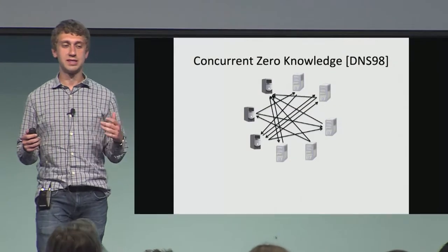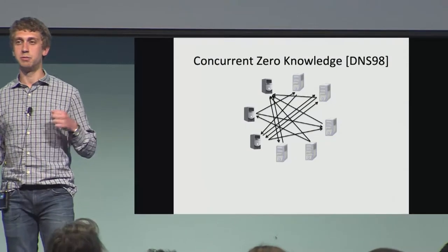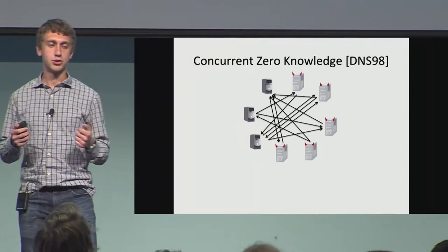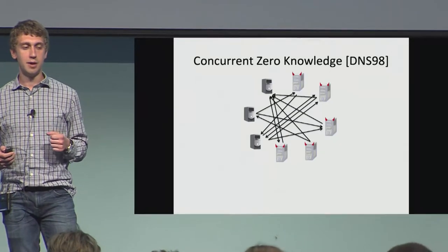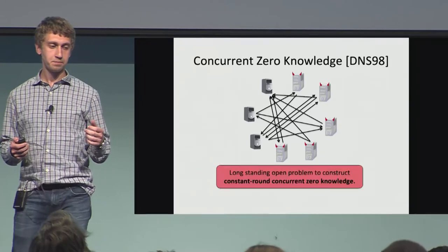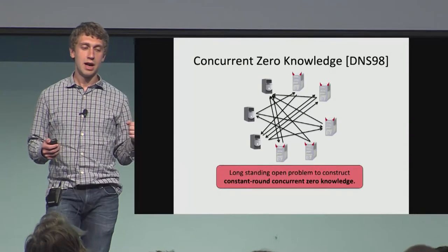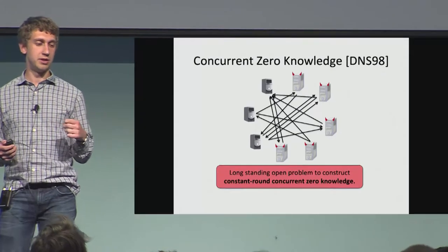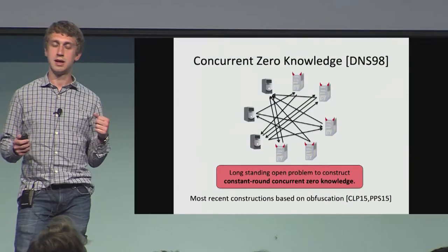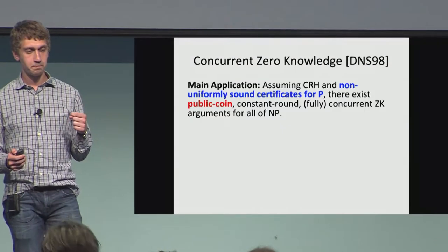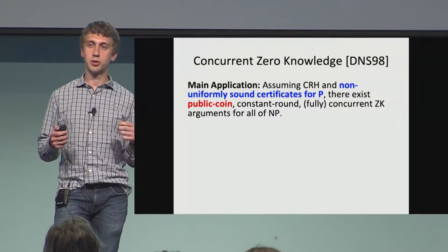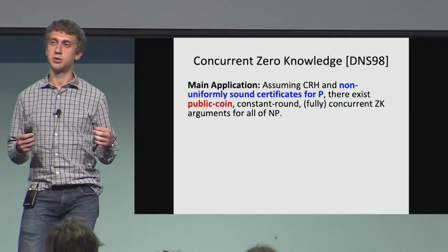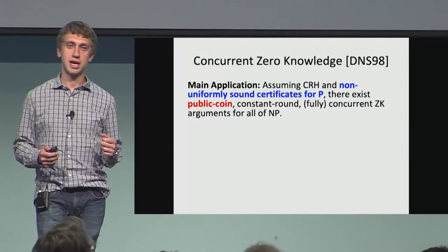However, the situation is more complex in the concurrent setting, where many verifiers interact with many provers in a distributed, complicated fashion. We want to guarantee that even if all verifiers are colluding and trying to extract information from possibly many independent provers, they still can't learn anything extra. The holy grail problem in this area has been to construct constant-round zero knowledge protocols with concurrent security. Until very recently, not much was known; in 2015 there were some constructions based on indistinguishability obfuscation. In this work, we show that given non-uniformly sound certificates for P as well as collision resistance, we can construct constant-round concurrent zero knowledge arguments for all of NP.